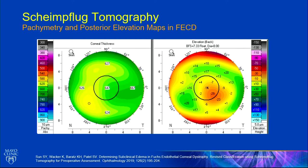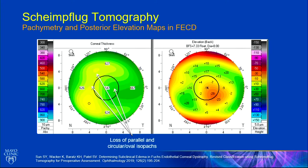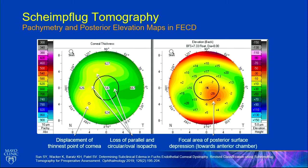In a cornea with Fuchs dystrophy, the isopacks — the lines joining points of equal thickness — are now very irregular; they're no longer circular or concentric. The thinnest point of the cornea is displaced nasally, which is abnormal. It's displaced nasally because the posterior surface is now bulging towards the anterior chamber due to an area of corneal edema. The tomography system can detect this corneal edema before you see it at the slit lamp. The three factors we look for tomographically are: loss of parallel isopacks, displacement of the thinnest point, and focal depression.